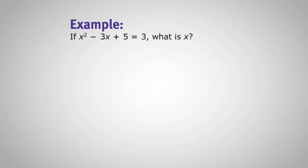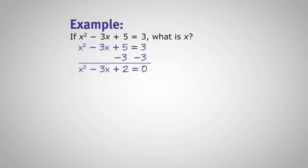Our first step is to set that quadratic equation equal to zero. We'll do that by subtracting 3 from both sides, giving us x squared minus 3x plus 2 is equal to zero.